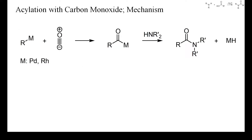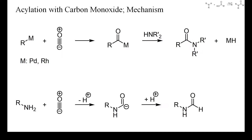One strategy to use carbon monoxide in acylations is the carbonylation of an organopalladium or rhodium compound, followed by nucleophilic displacement of the metal by an amine. These reactions only require catalytic amounts of noble metal. Then amines can be formylated directly with carbon monoxide, and numerous catalysts have been developed for this purpose.